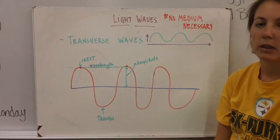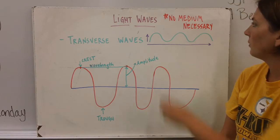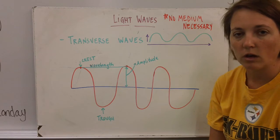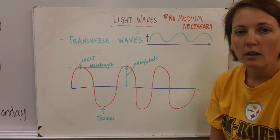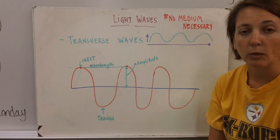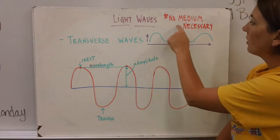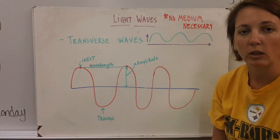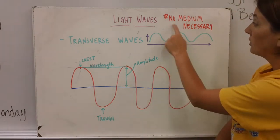So let's get started with light waves. The first thing you need to know with light waves is there is no medium necessary. Now medium is fancy talk for a substance. What type of matter is it traveling through? Solid, liquid or gas? So light waves, they don't need a medium which means they can travel through empty space which is called a vacuum. And that's very important to know about light waves.